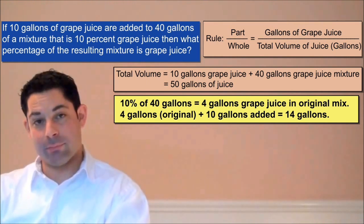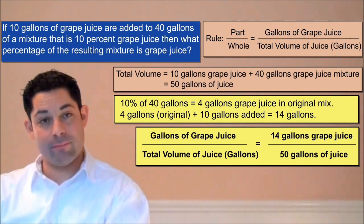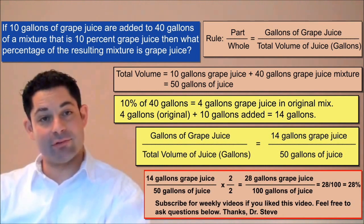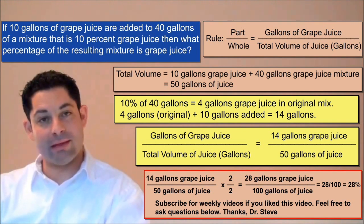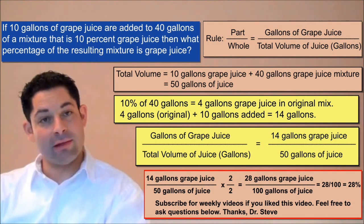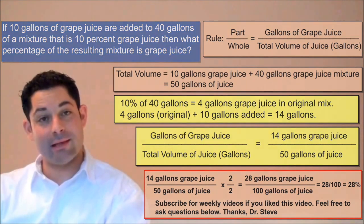We're now ready to compute the percentage: 14 gallons of grape juice over 50 gallons of juice. Remember that a percent is just a fraction with a denominator of 100. So instead of dividing 14 by 50, we can simply multiply the ratio by 2 over 2. So the answer to today's mixing problem is 28%.